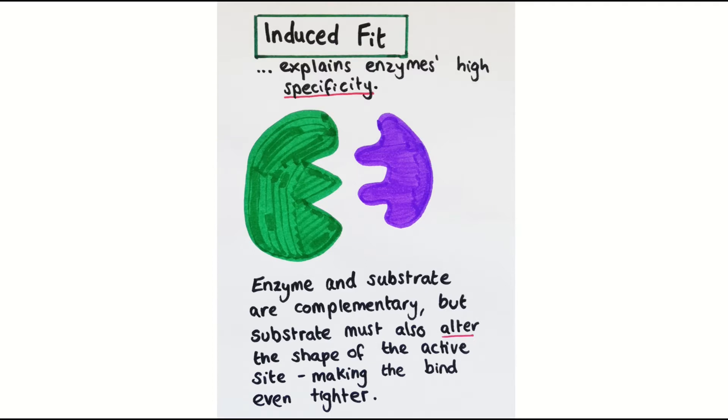Here the substrate must not only be a very similar shape to the active site, but it must make the active site change shape slightly to accommodate it. This explains the high specificity of enzymes a lot better.